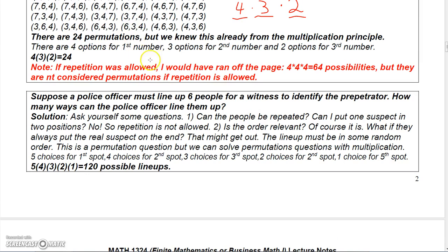If repetition were allowed, there would be four times four times four which is sixty-four possibilities — but those wouldn't be considered permutations because permutations don't allow repetition.